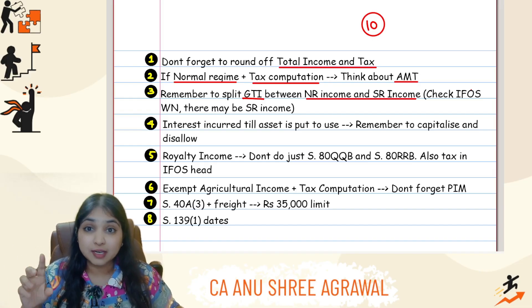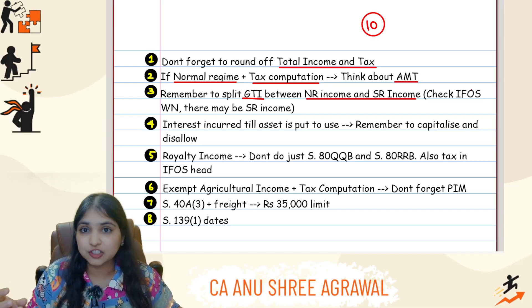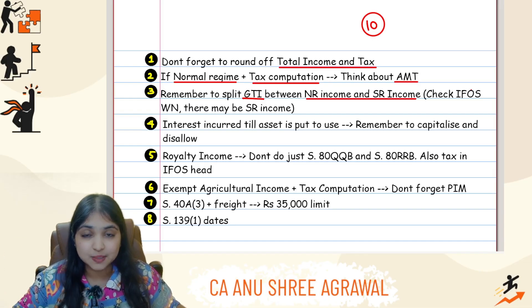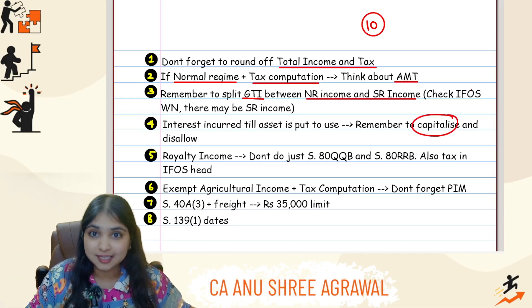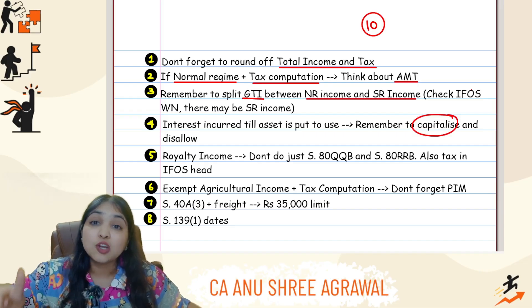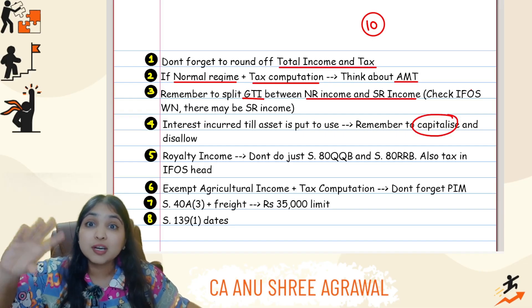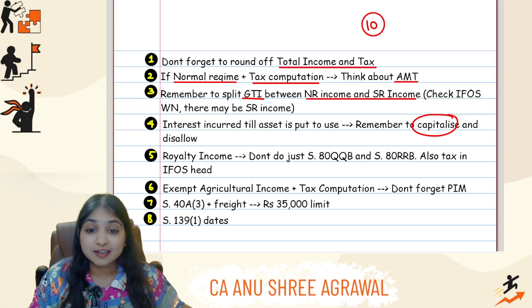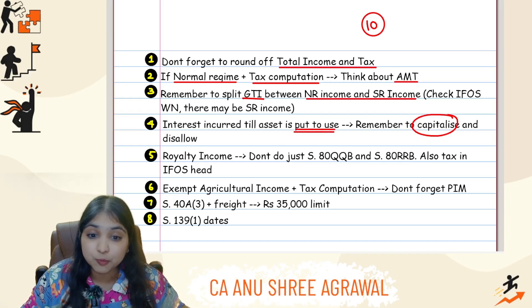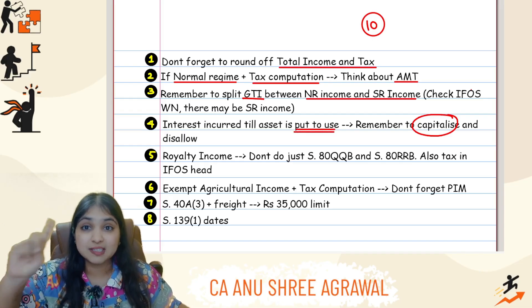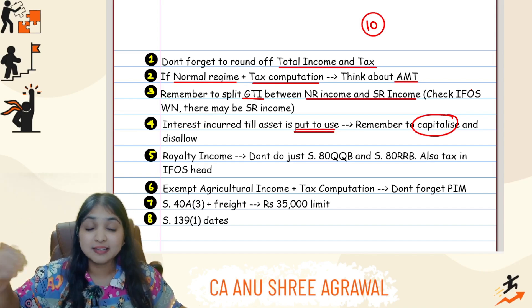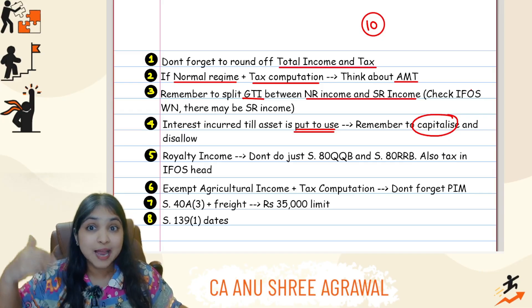Point number four: in depreciation calculations, whatever interest an assessee has incurred till the asset is put to use — remember to capitalize that interest, but don't just capitalize it. Also remember to disallow that interest from your PGBP calculation. So two adjustments: number one, it will be disallowed from PGBP, and number two, it has to be capitalized, meaning it has to be added to the block.